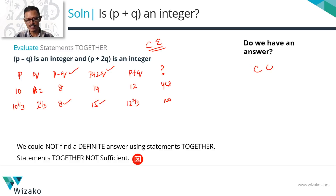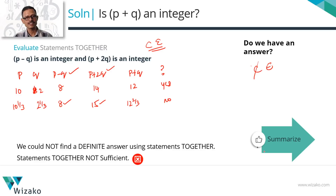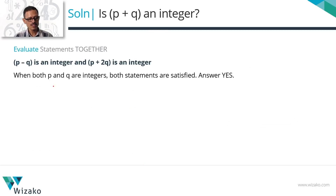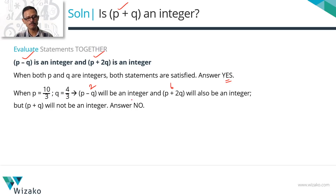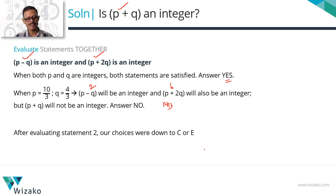We were down to C or E. Since the combined statements are not sufficient, eliminate C. Answer choice E is correct. For extra verification: p = 10/3, q = 4/3 gives p − q = 2 (integer), p + 2q = 6 (integer), but p + q = 14/3 — not an integer. This confirms we don't have a definite yes or no even when both statements hold. Answer is E.